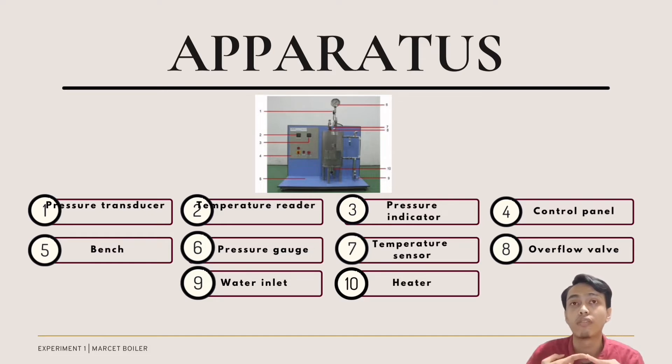In the Marcet Boiler, we have 10 apparatus. The first is the pressure transducer, which helps convert the pressure to an analog electric signal. The second is the temperature reader, which locates the temperature in the heater. The third is the pressure gauge. Fourth is the control panel, which contains a main switch and green switch.